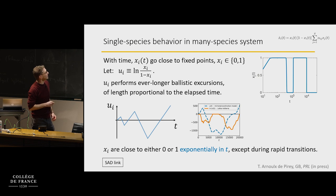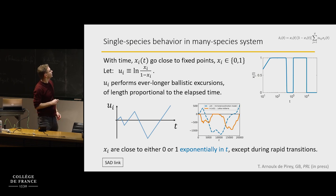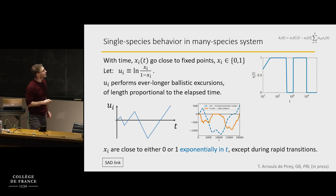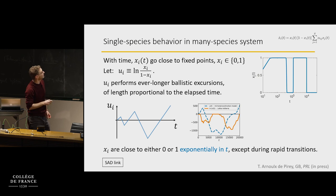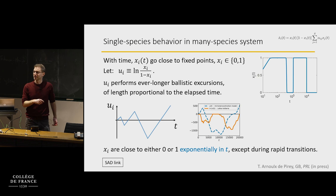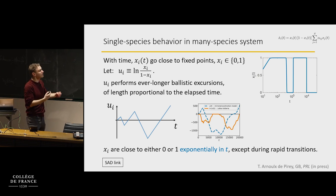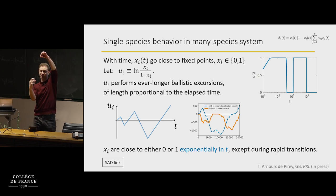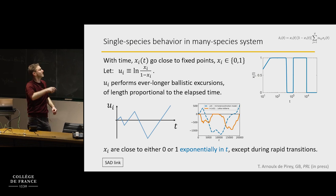What this means is that xi, when folded back between 0 and 1, gets exponentially close to either 0 or 1. You're really, really close to these two absorbing values, except during the rapid transitions that happen in between.